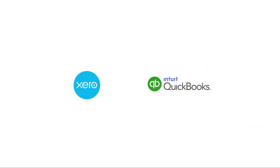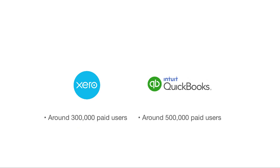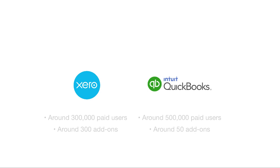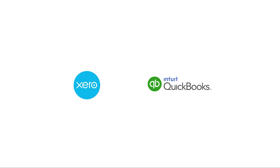Xero is their closest competitor in terms of functionality. While Xero's US customers are in the tens of thousands, their global user base is currently hovering at around 300,000. More importantly, Xero has developed a robust ecosystem of add-ons numbering around 300, whereas QBO's add-on numbers currently hover around 50. I think it's pressure from companies like Xero that's motivated QuickBooks to take their online offerings more seriously, and I'm happy with the positive changes made to QBO in the past year.